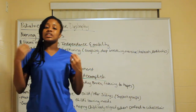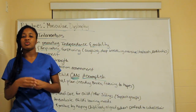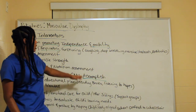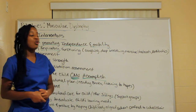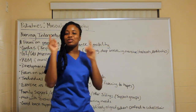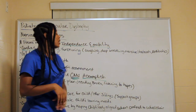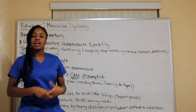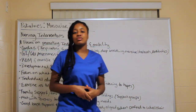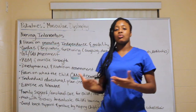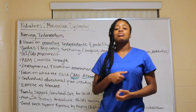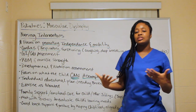Teach parents to individualize the child's educational plan — especially for Duchenne, which involves intellectual disability. Consider whether reading books, listening to tapes, or watching videos works best. Everyone learns differently, so individualize the plan based on the child's needs.